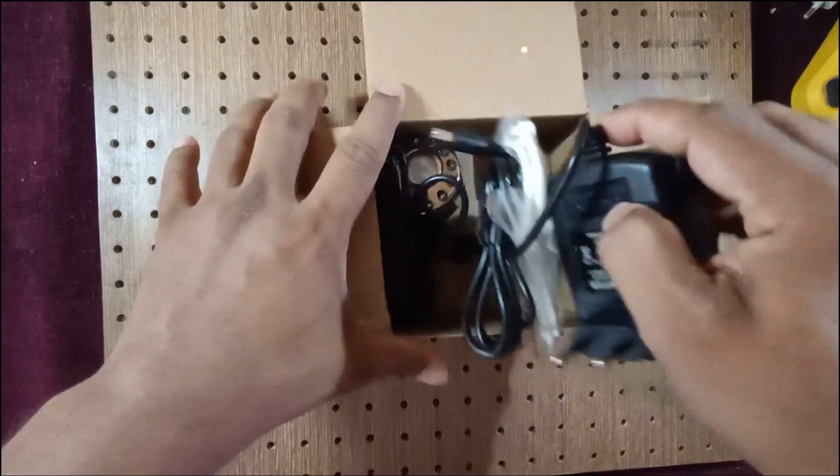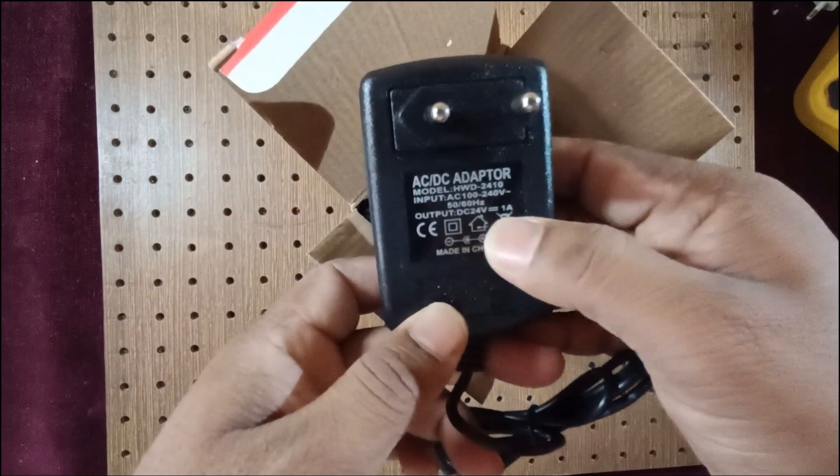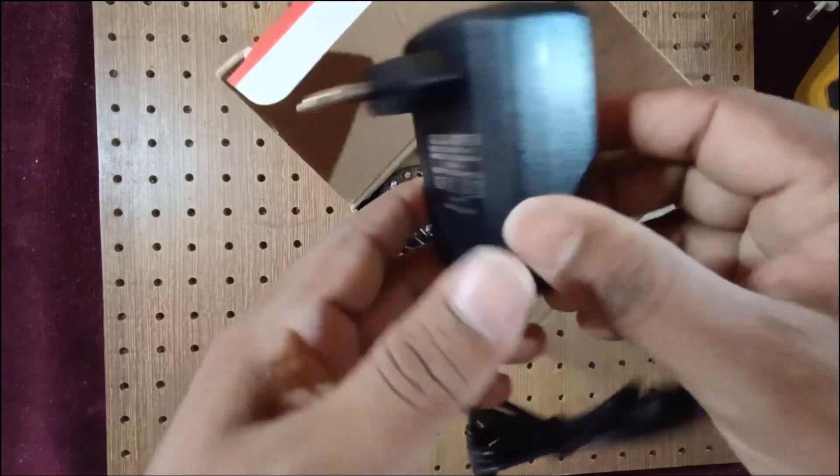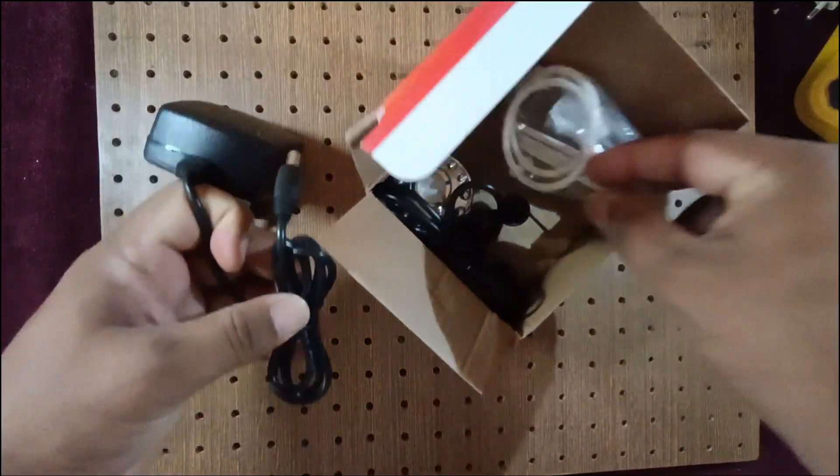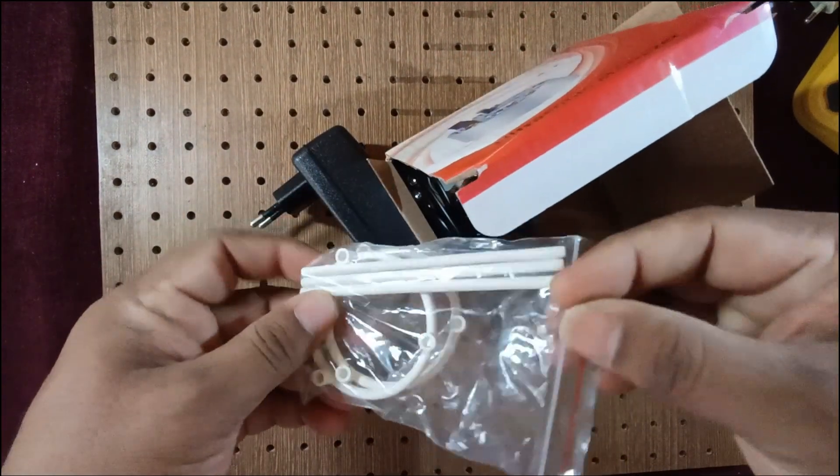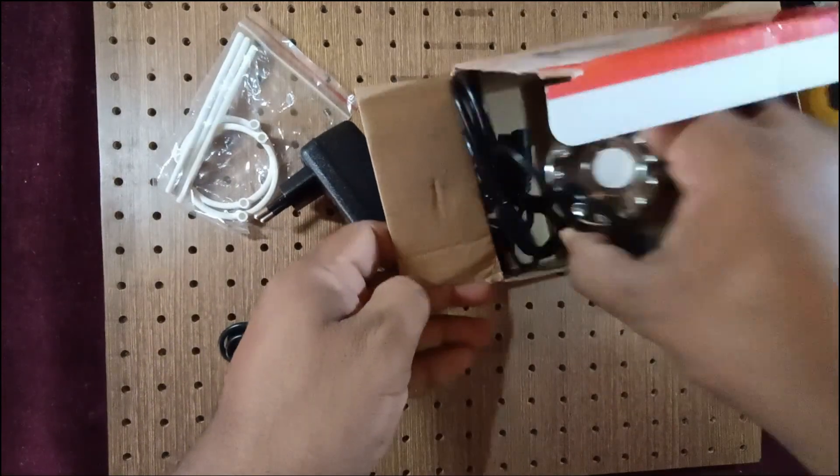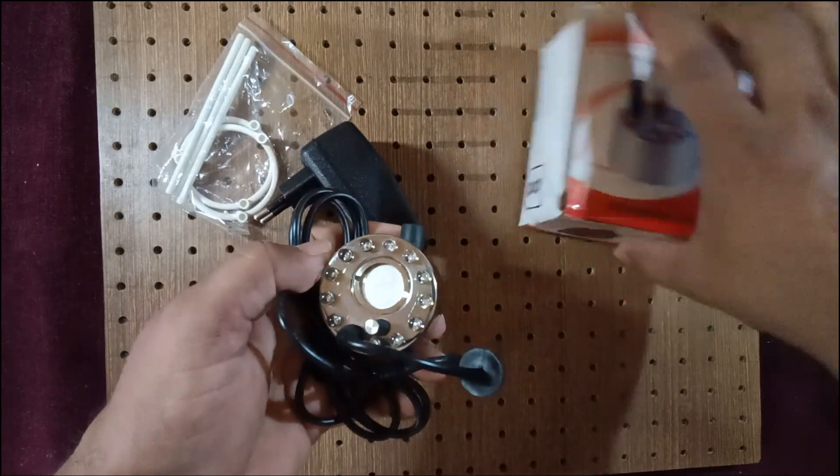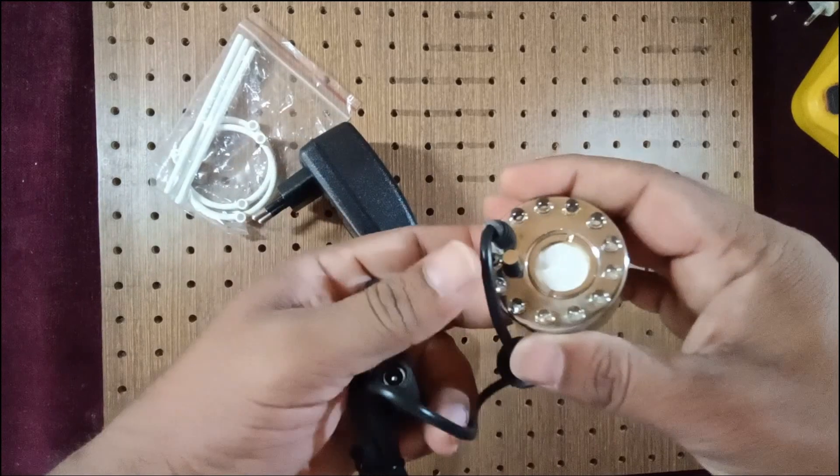Here you can see it has an adapter, 24 volt DC with 1 ampere. They've given one adapter, then some plastic stand where you can hold it. Next, this is the main humidifier body made of stainless steel, which is of very good quality.